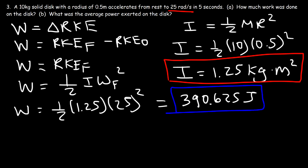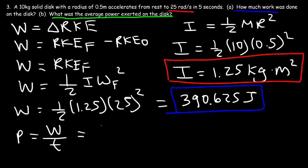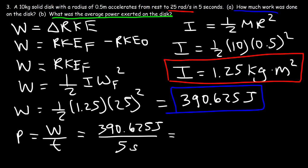That is the answer to part A. For part B — the average power exerted on the disk — average power is work over time. The work is 390.625 joules divided by a time period of 5 seconds, which gives 78.125 watts.